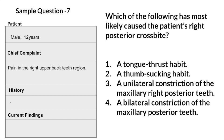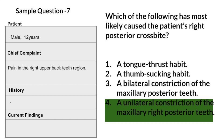Question 7: Patient, male, 12 years, chief complaint pain in the right upper back teeth region. Which of the following has the most likely cause of the patient's right posterior crossbite? A tongue thrust habit, a thumb sucking habit, unilateral constriction of maxillary right posterior teeth, or bilateral constriction of the maxillary posterior teeth. Answer: unilateral constriction of maxillary right posterior teeth.